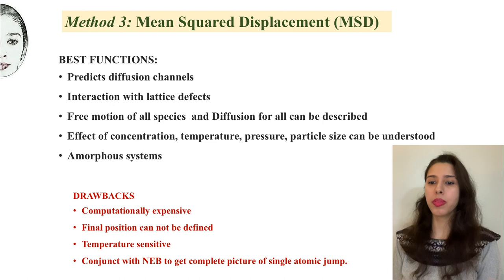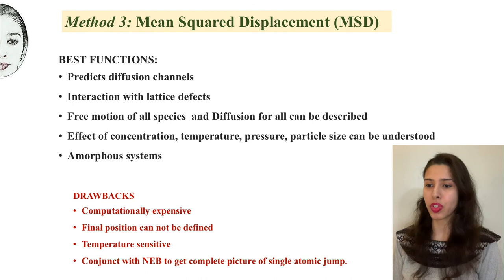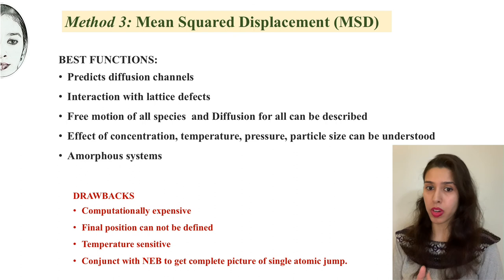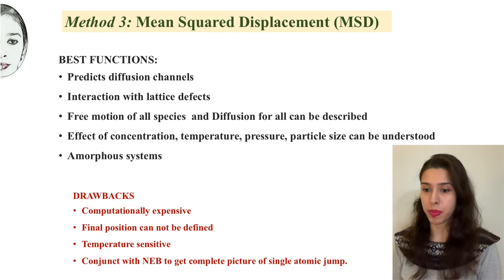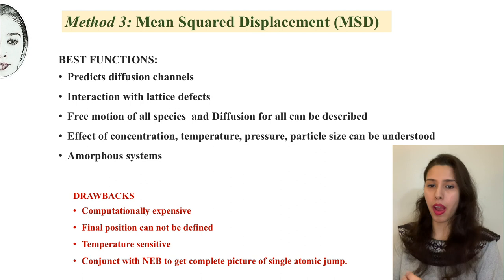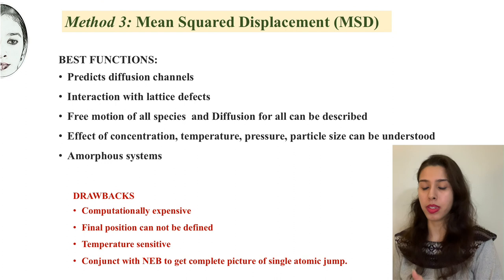This method is good to predict diffusion channels and the diffusivity of the overall system, and to understand the effect of parameters like concentration, pressure, and temperature. It is good for amorphous systems. However, it has certain drawbacks: it is very computationally expensive since molecular dynamics and DFT are performed for each frame. The final position is not really defined, so if you want to get the idea of one single atom jump from one location to another, it needs to be used in combination with Nudged Elastic Band. Also, temperatures must be kept below the melting point.